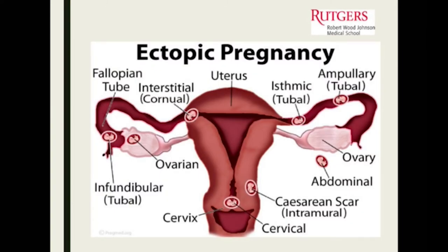This diagram shows the uterus and the fallopian tubes. Ninety-five percent of ectopic pregnancies are in the fallopian tubes. The fallopian tubes are very thin — probably half the thickness of a pinky finger — so if a pregnancy is growing and ruptures the tube, the patient's going to internally bleed, which is life-threatening. Ninety-five percent occur in the tubes, most commonly in the ampullary area.